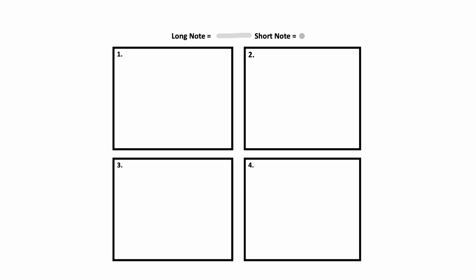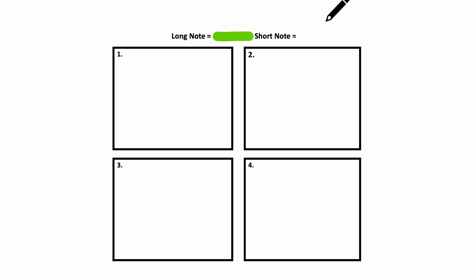Number two. You will hear several notes for each box. When you hear a long note, draw a line. When you hear a short note, draw a dot. Draw all of the notes that you hear in the order that you hear them.